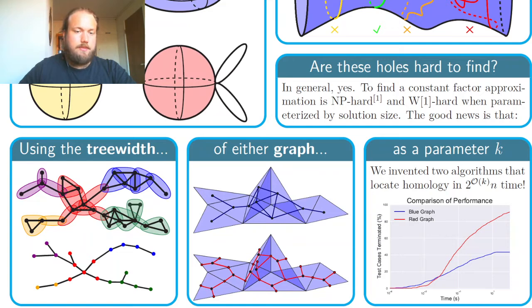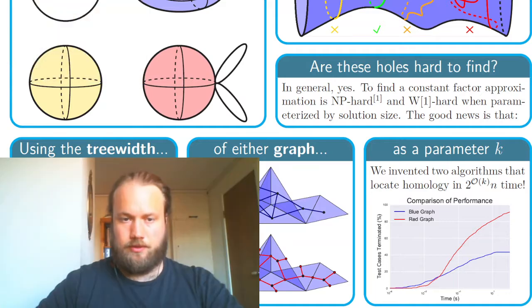How these components are glued together can be tracked using different graphs and we have looked at two graphs in particular, both of them shown in this figure. It turns out that using the tree width of either of these graphs as a parameter, we have managed to invent and implement two different parameterized algorithms that find the smallest representative of a given hole.